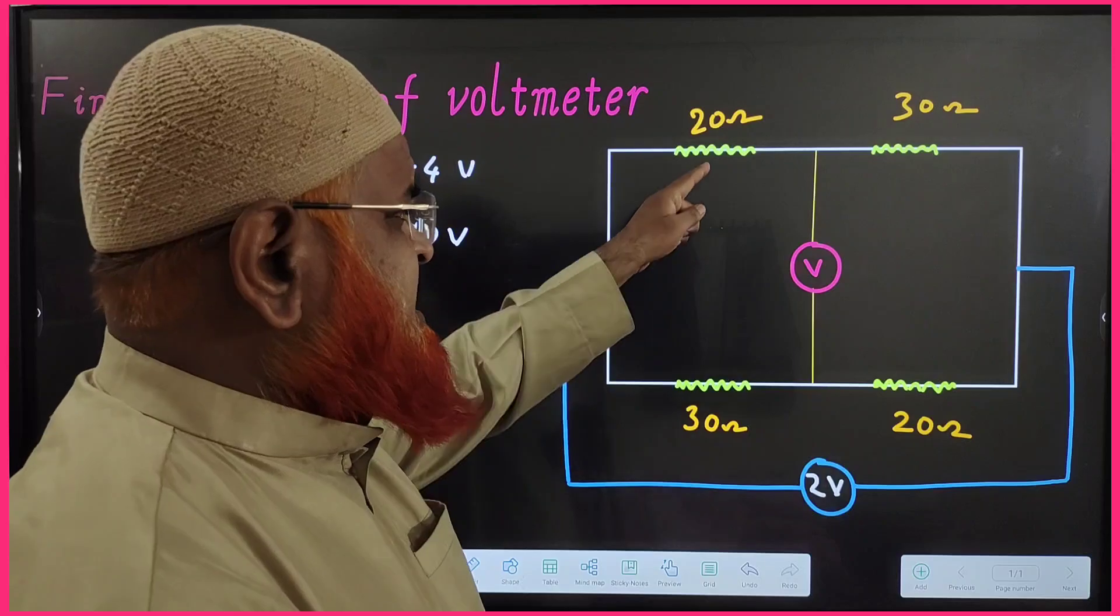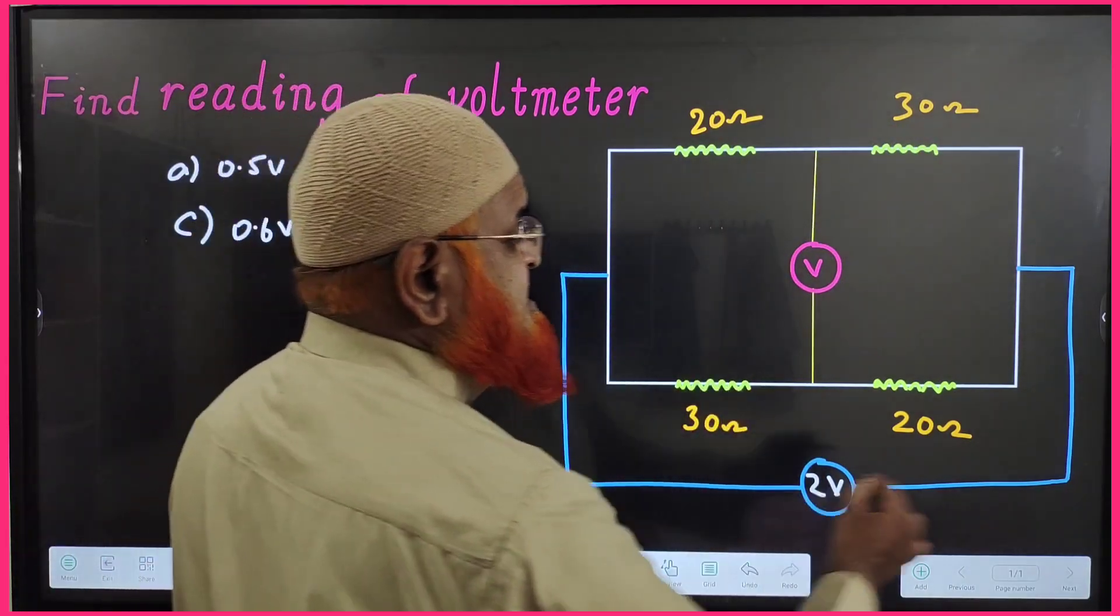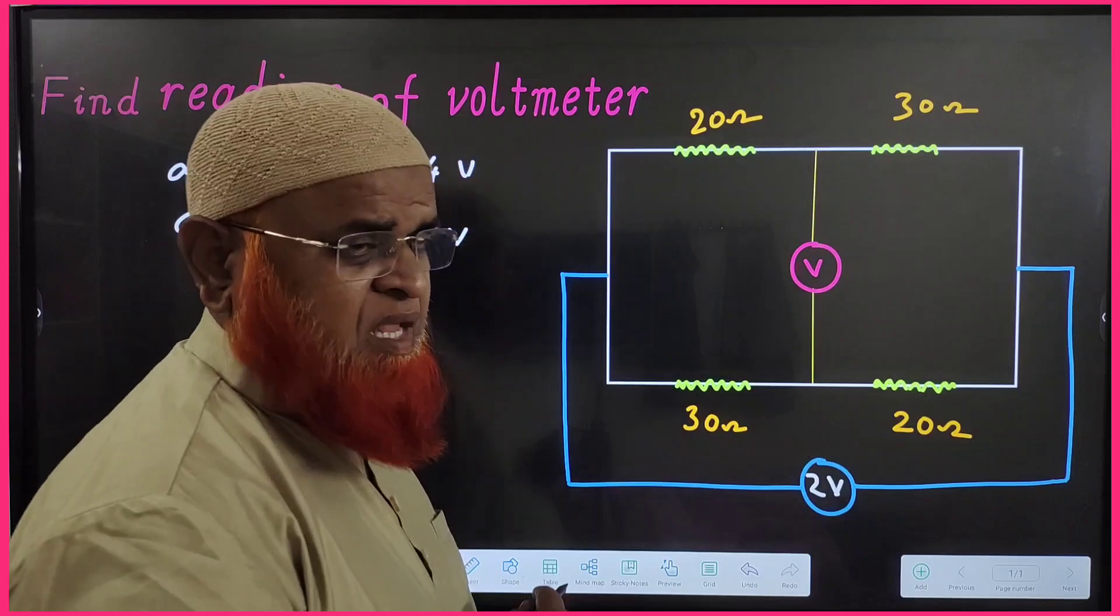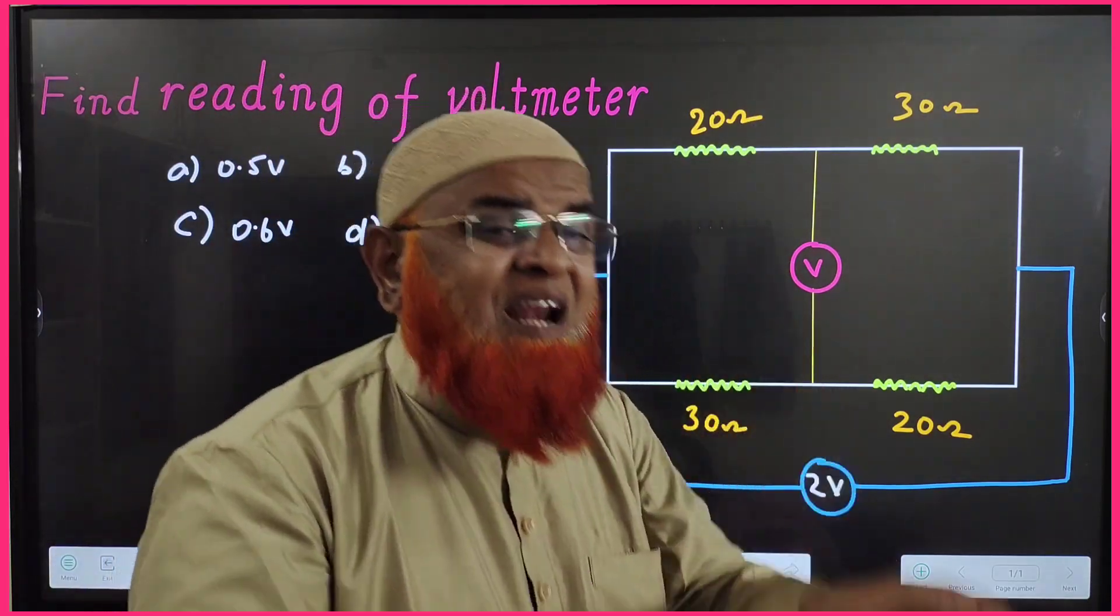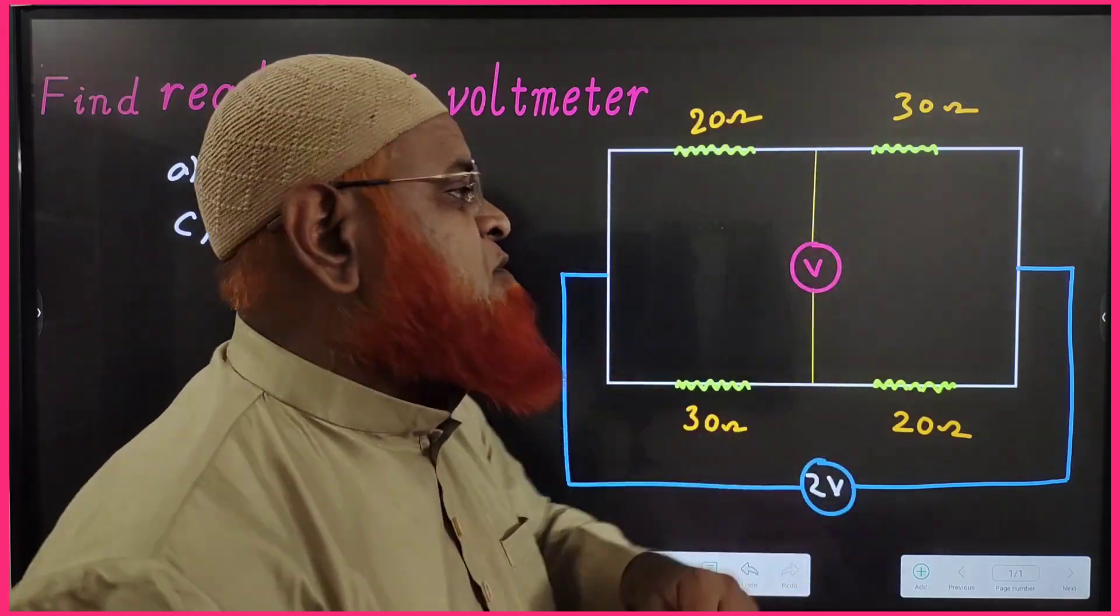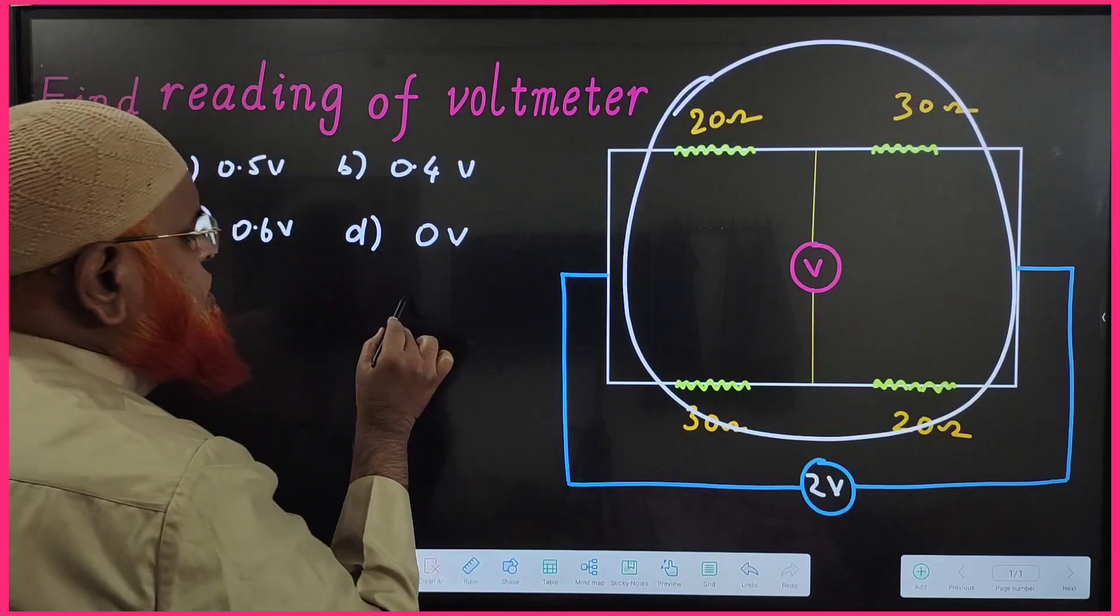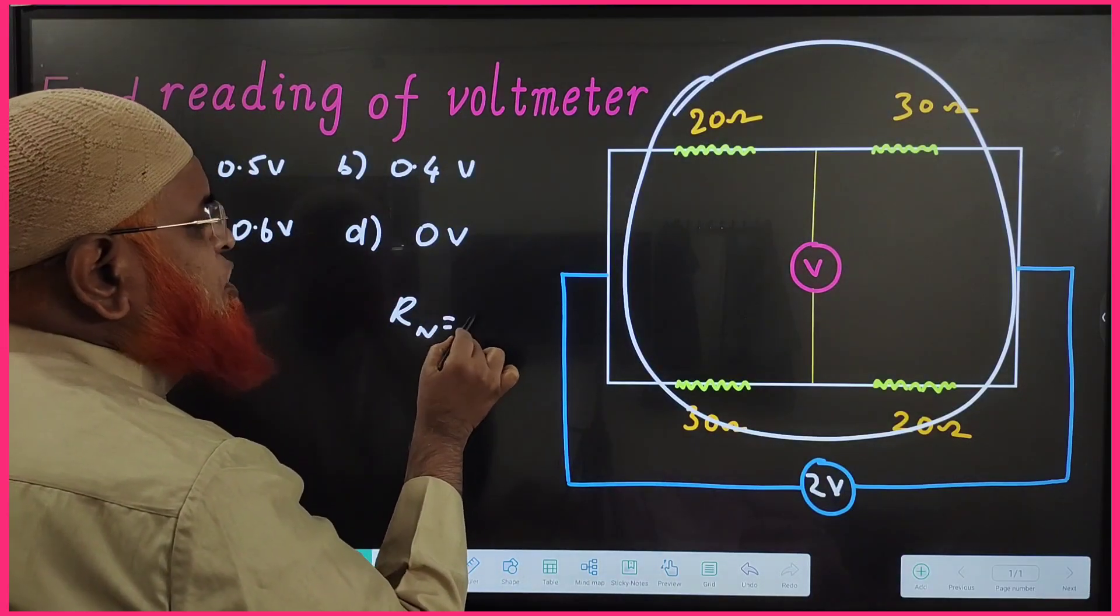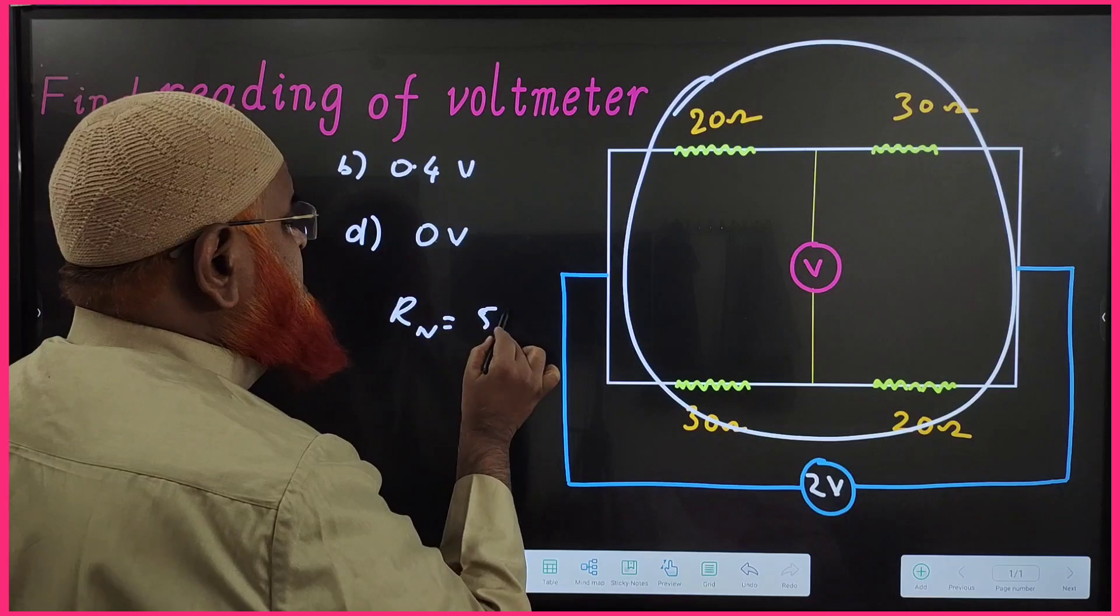The first thing is you know the upper resistance is 50, lower resistance is 50. When both the resistors are parallel and they are same, then the resultant is half of anyone. For all these four resistors, the net resistance is going to be 50 by 2, which is 25 ohms.